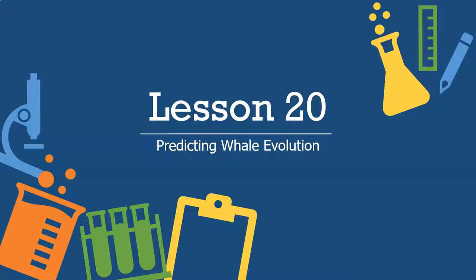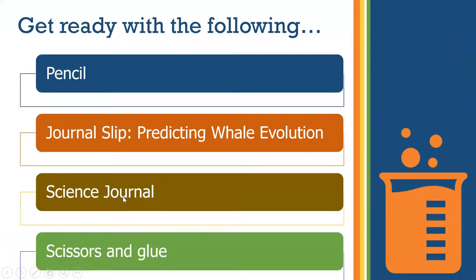In Lesson 20, you're going to be presented with a new phenomenon for which scientists have formulated a claim. As we explore this phenomenon, we will examine different lines of evidence that either support or refute this claim. Today you're going to need a pencil, the journal slip, your science journal, a pair of scissors, and glue.